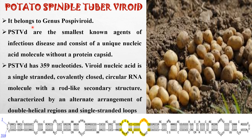Potato Spindle Tuber Viroid belongs to genus Pospiviroid. It is the smallest known agent of infectious diseases and consists of a unique nucleic acid molecule without a protein capsid. Potato Spindle Tuber Viroid has 359 nucleotides. The viroid nucleic acid is a single-stranded, covalently closed circular RNA molecule with a rod-like secondary structure, characterized by an alternate arrangement of double helical regions and single-stranded loops.